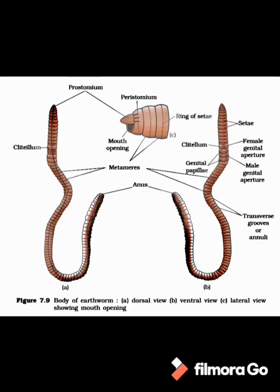The spermathecae open outside by spermathecal apertures, which are present in the septum from segment 5th to 9th — 1st pair between 5th and 6th, 2nd pair between 6th and 7th, 3rd pair between 7th and 8th, and 4th pair between 8th and 9th. At the mid-ventral position of the 14th segment, a single female genital aperture is present, while in the 18th segment, ventrolaterally, one pair of male genital apertures are present.